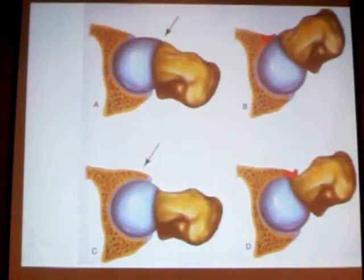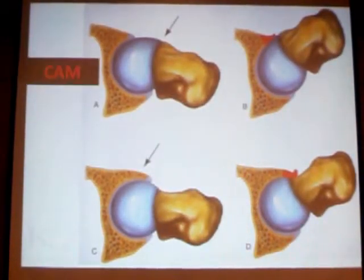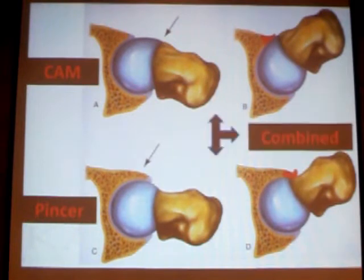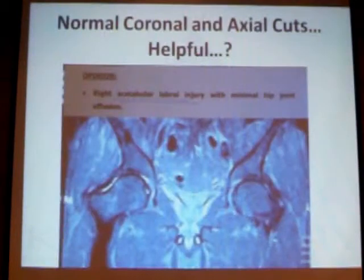For people who don't know femoro-acetabular impingement, it's two types: the cam type, which is a bump on the femoral side, and the pincer type, which is an over-coverage from the acetabular side. The most common type is the combined type — a combination of the cam and the pincer type.